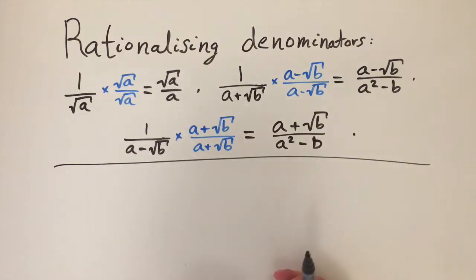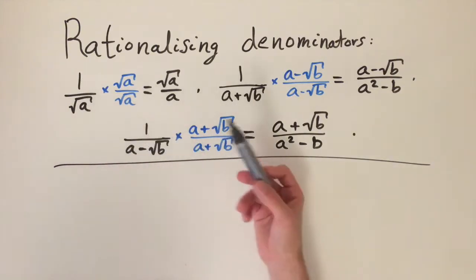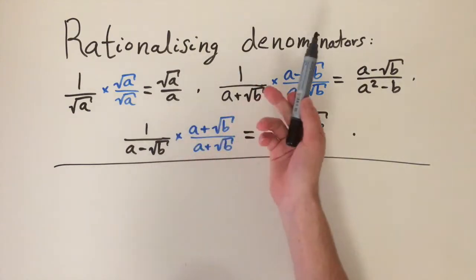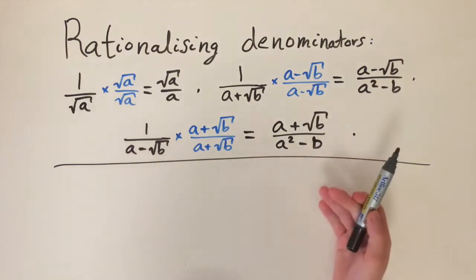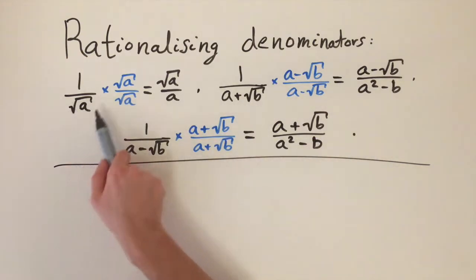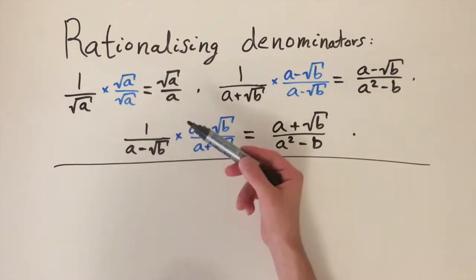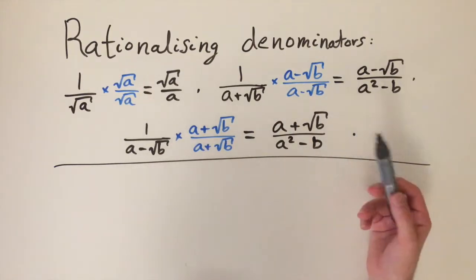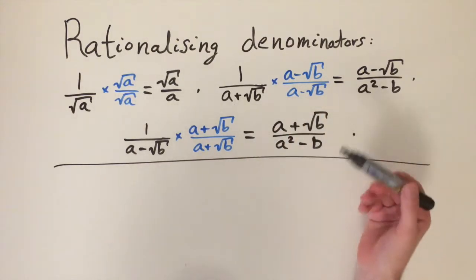One question you might have is: why do we want to do this? If you think about how a computer would evaluate this fraction, it would much rather divide by a rational number — a whole number — as opposed to an irrational number which is infinitely long. A computer would have to approximate an irrational, whereas if you're dividing by just an integer or a fraction it's going to be a lot easier. So this is the motivation behind why we want to rationalize denominators.